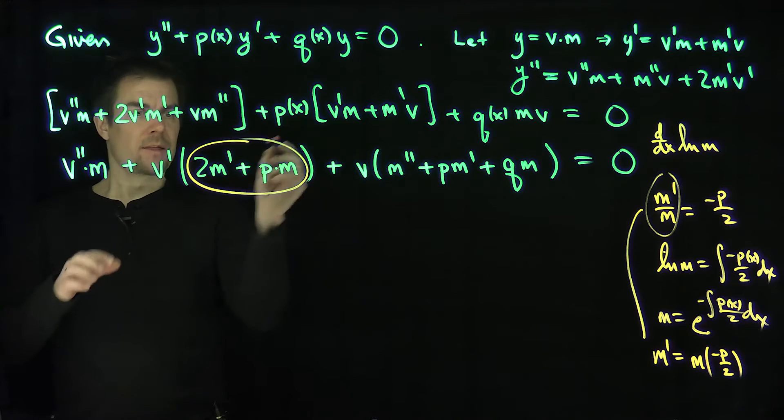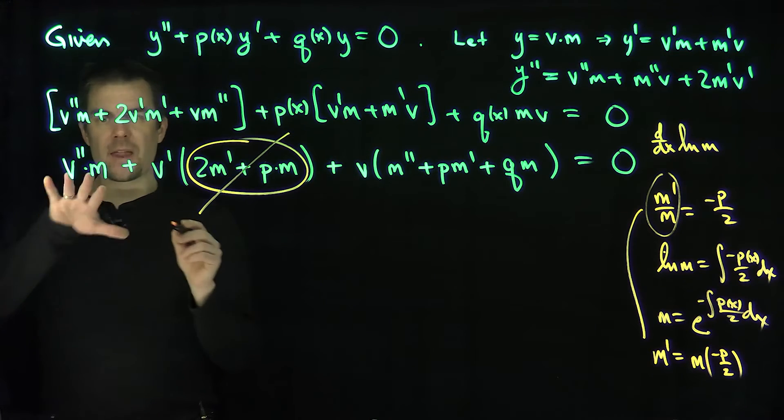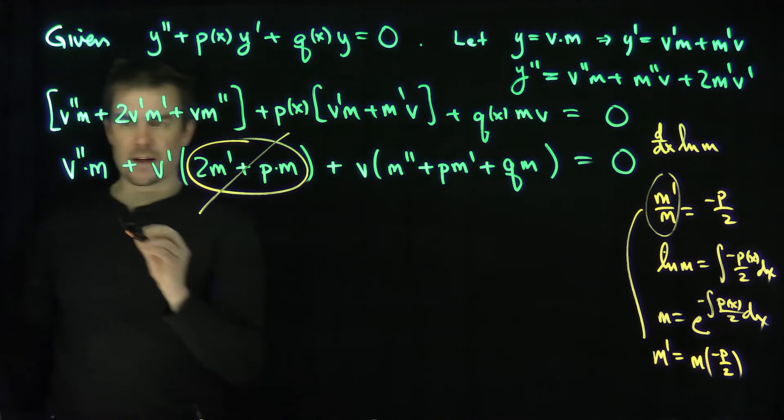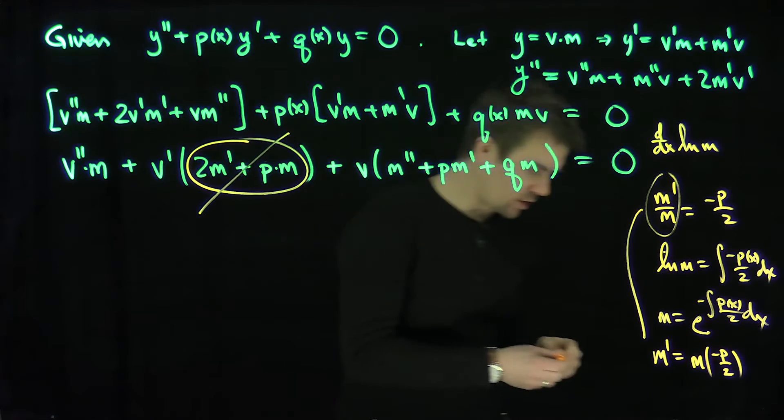All right. So with that reduction over here, this whole term is going to be gone. And then I'm going to divide by m since there's a zero on the right hand side. It's homogeneous. And so what will our equation look like?